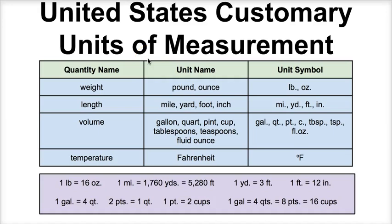Here is a table of the different ways we measure things in the United States. The rest of the world is not using US customary units. Everyone outside this country uses the metric system. In the US, we measure weight in pounds and ounces while the rest of the world uses kilograms and milligrams. For length, we use miles, yards, feet, and inches, while the rest of the world uses millimeters, kilometers, and centimeters.